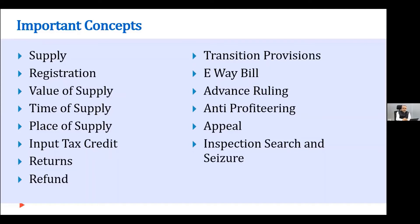Then ITC — Input Tax Credit. In fact, the definition of input tax credit in GST has been quite wide, much better than what we used to have in the earlier regime, but it also had its own disappointing features. Then Returns, Refunds, Transition Provisions, E-way Bill, Advance Ruling. There is also a mechanism called Anti-Profiteering — because if tax rates are lower now, the expectation is that businesses pass on the benefit to consumers. Then Appeal, Inspection, Search and Seizure — these are the important concepts in GST.